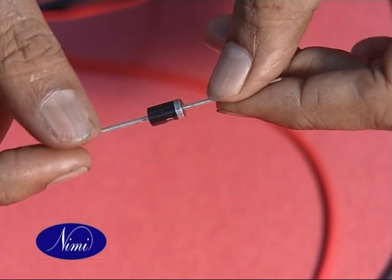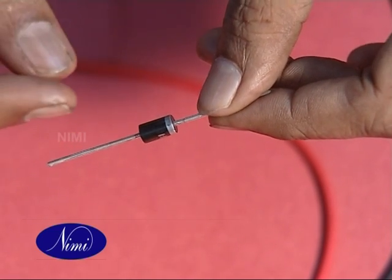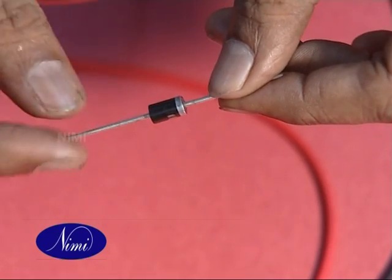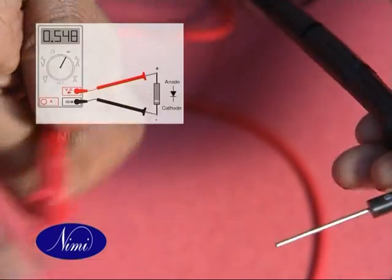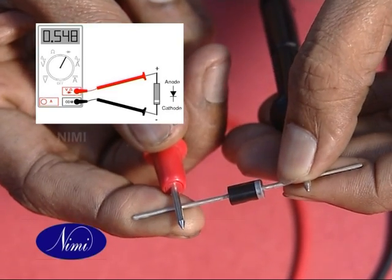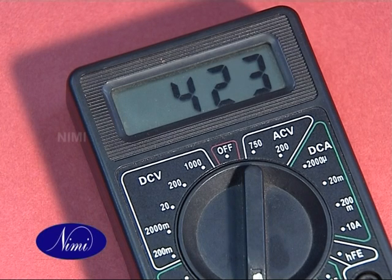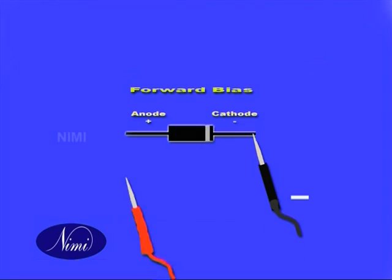The diode only works by forward bias. Forward bias means giving positive to anode and negative to cathode. Connect the negative probe to cathode and positive probe to anode. Now we observe some reading. The diode is in working condition. This is called forward bias.